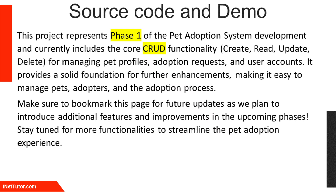This project represents Phase 1 of the Pet Adoption System development and currently includes the core CRUD functionality — Create, Read, Update, Delete — for managing pet profiles, adoption requests, and user accounts. It provides a solid foundation for further enhancements, making it easy to manage pets, adopters, and the adoption process. Make sure to bookmark this page for future updates as we plan to introduce additional features and improvements in the upcoming phases. Stay tuned for more functionalities to streamline the pet adoption experience.